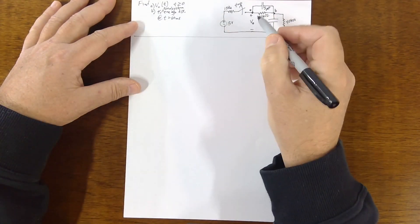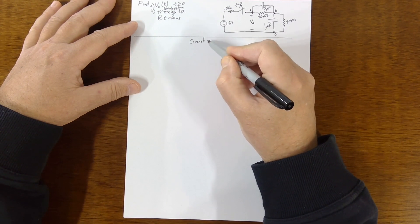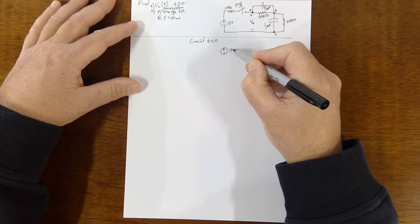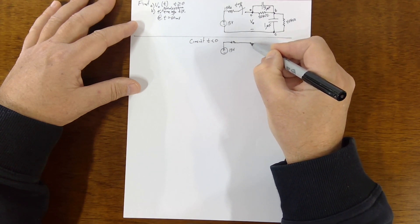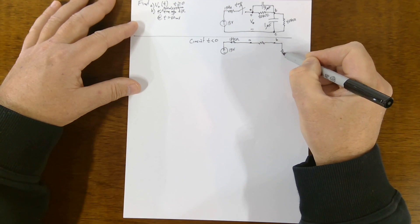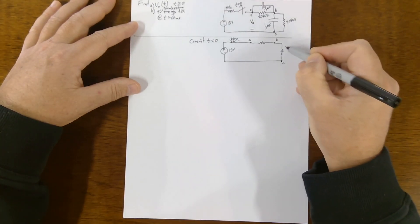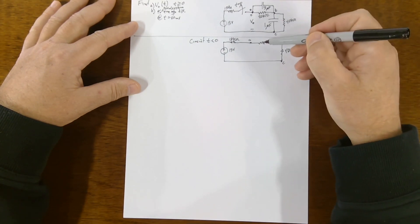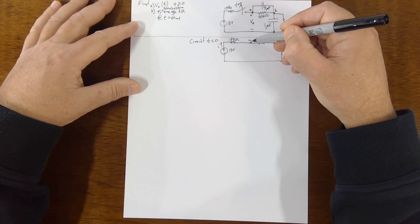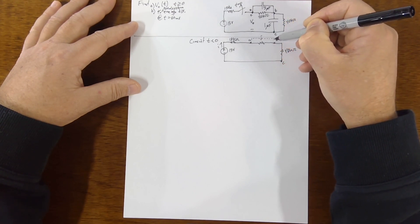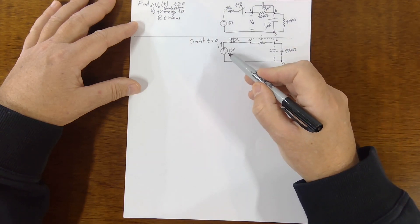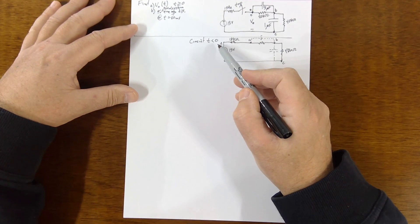The first thing with these natural response problems is to draw the circuit at multiple points in time. For t much less than zero, the switch is closed. The current flows through the 20K and 40K resistors. The capacitors are present but behave as open circuits because we're in steady state — the switch has been closed for a long time.